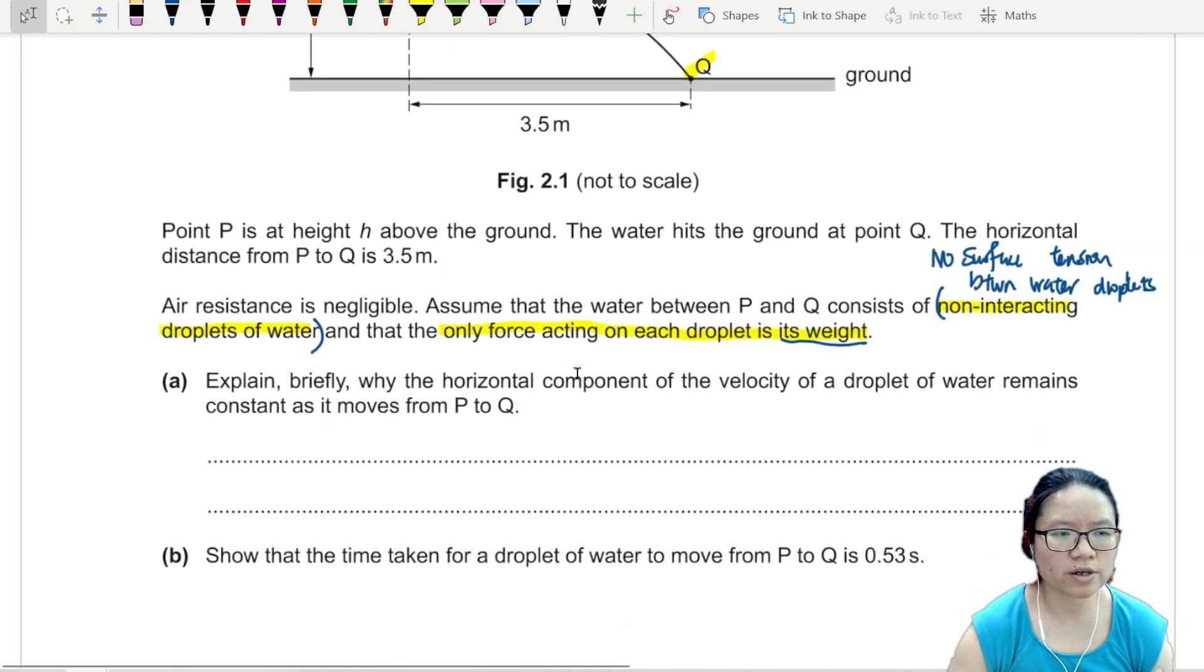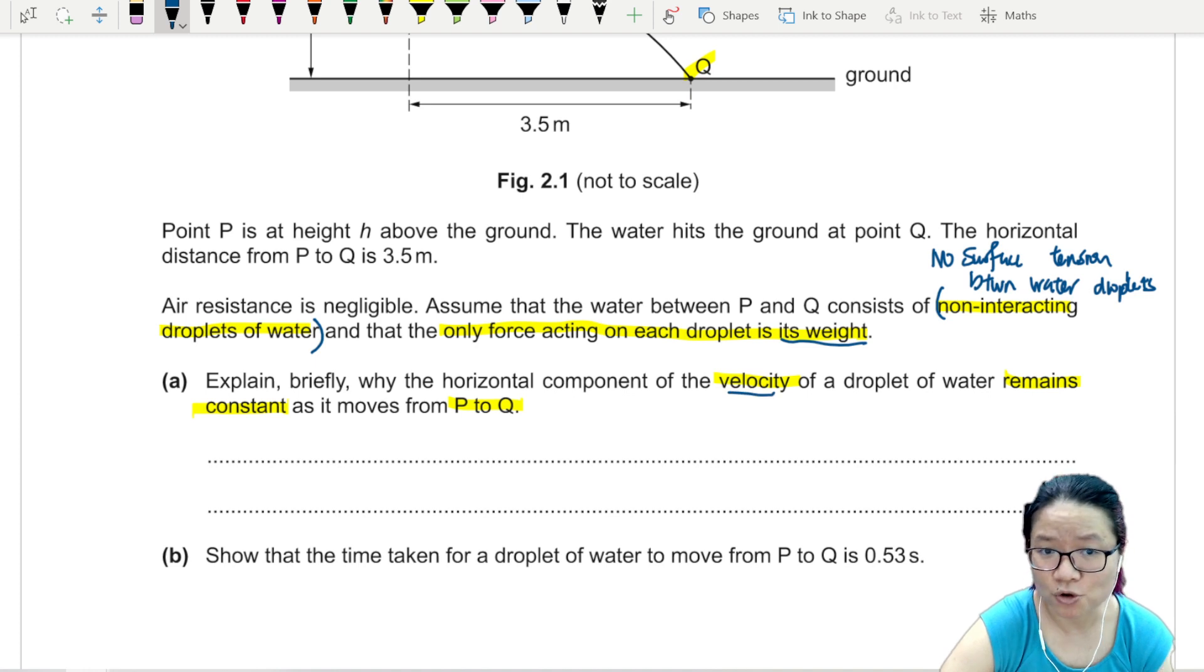Explain briefly why the horizontal component of velocity of the water droplet remains constant as it moves from P to Q. So if the velocity is constant according to Newton's second law, Newton's first law, it means that there is no force. Because force causes change in velocity. So I can say that the force on the droplet of water in the horizontal direction is zero.